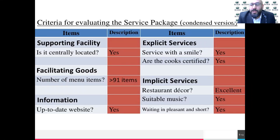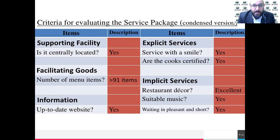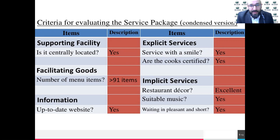For any service, you could use these five criteria to evaluate it and see if you really have a nice facility, location, information - is it up to date? How many items do you offer, variety of items to the customer? You're looking into the training - that's the explicit services. Do you offer training for your employees? Are they certified? And implicit, which is basically the decor of the facility, the music, the background music.